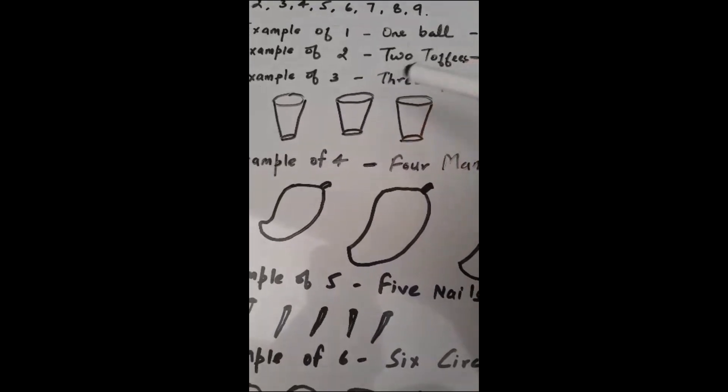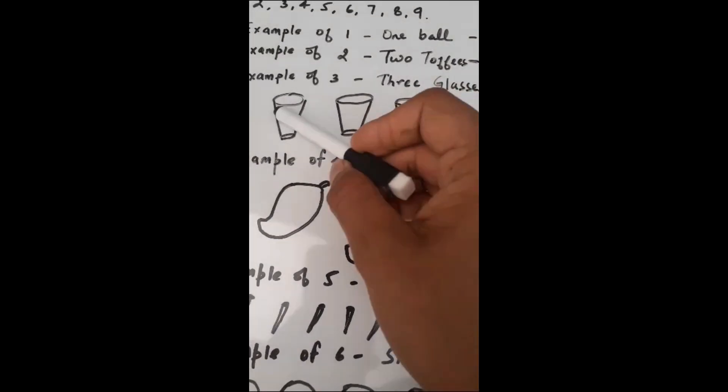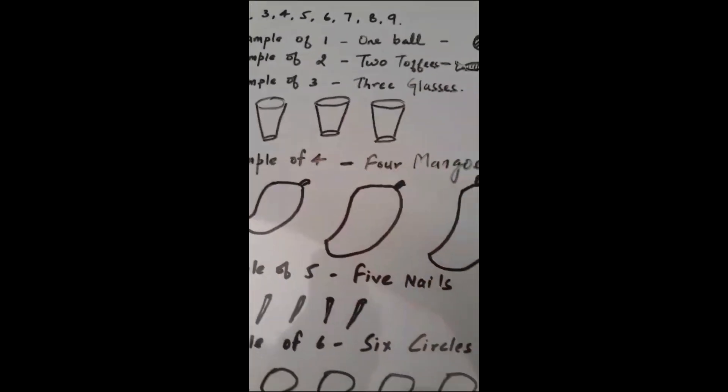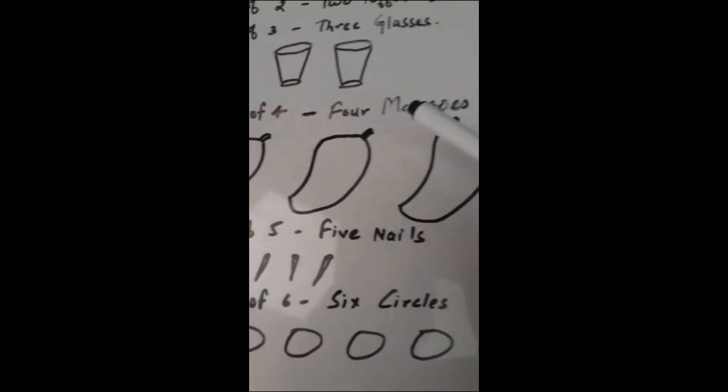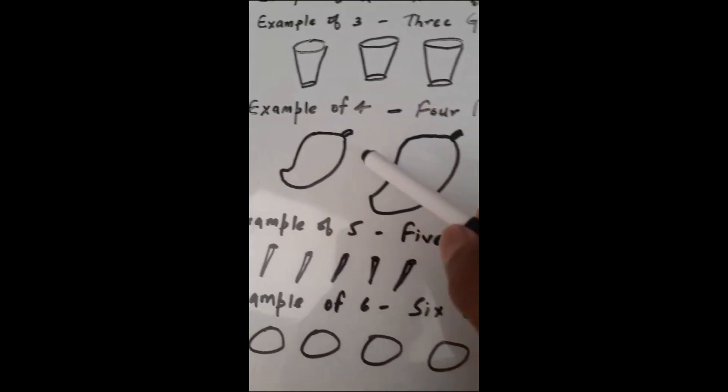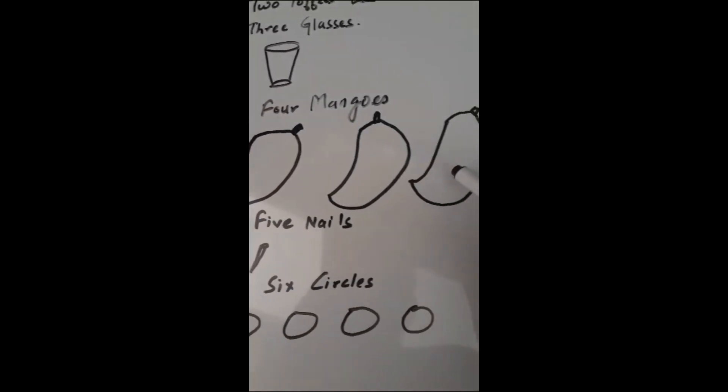Then example of 3, there are 3 glasses: 1, 2, and 3. Example of 4, if you see there are 4 mangoes: 1, 2, 3, and 4.